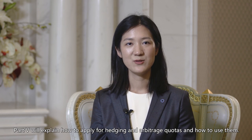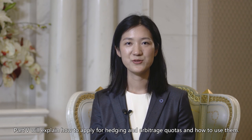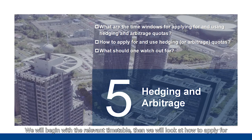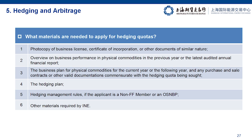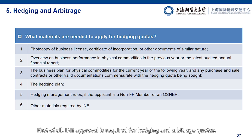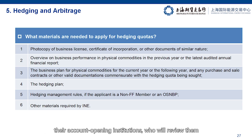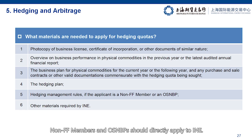Part five will explain how to apply for hedging and arbitrage quotas and how to use them. We will begin with the relevant timetable, then look at how to apply for and use the quotas, and what things one should look out for. First of all, INE approval is required for hedging and arbitrage quotas. To obtain a hedging quota, clients should submit applications to their account opening institutions, who will review them and complete the subsequent procedures with INE. Non-FF members and OSMBPs should directly apply to INE.